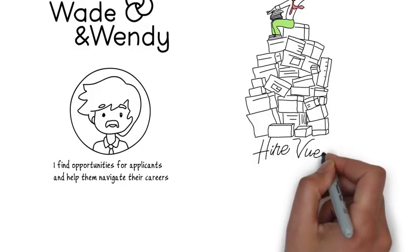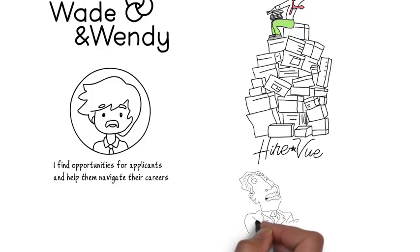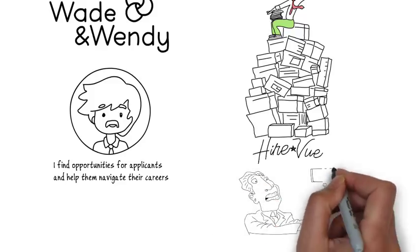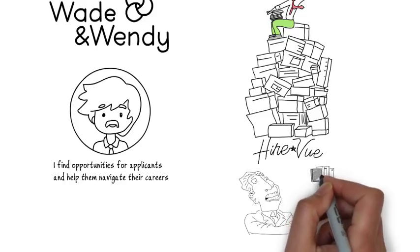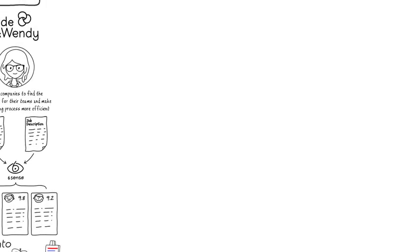HireVue marries deep machine learning with industrial organizational psychology. The product works by capturing the thousands of attributes from a candidate's video interview. HireVue will then transcribe the audio and capture the variances in someone's voice and analyze the visual nuances in the answers the candidate provides and then score them accordingly.